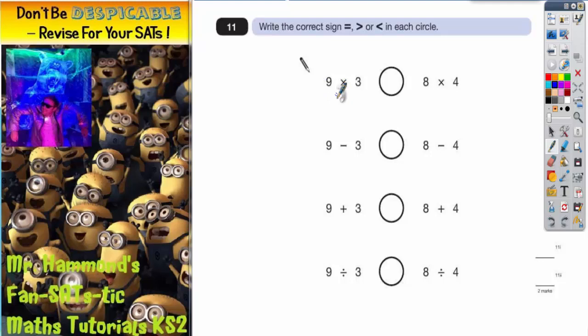So 9 3's are 27, 8 4's are 32, 9 take away 3 is 6, 8 take away 4 is 4.